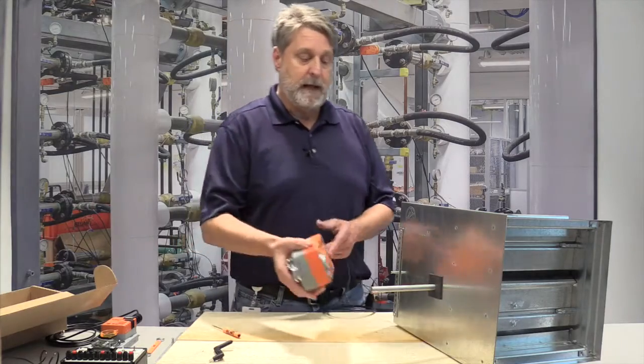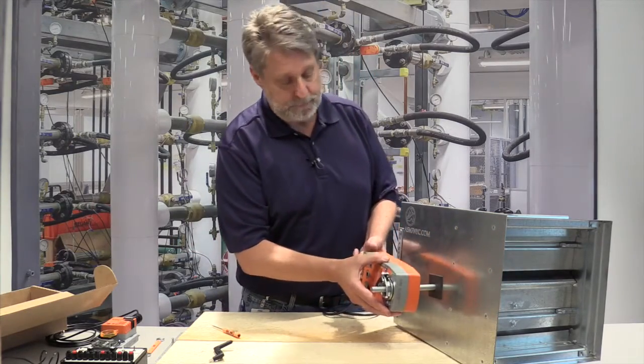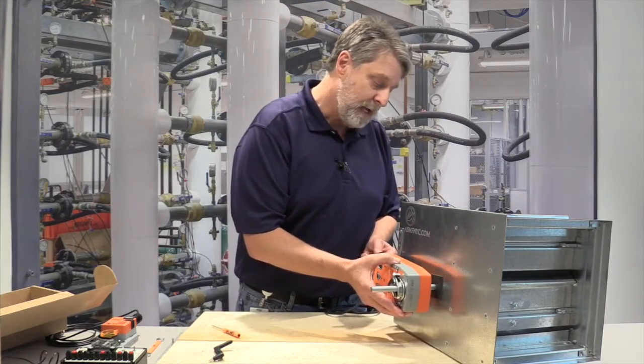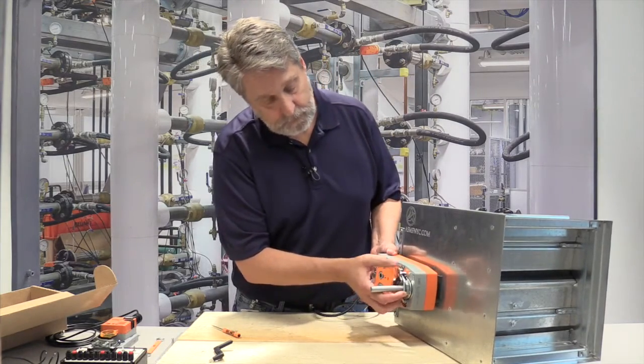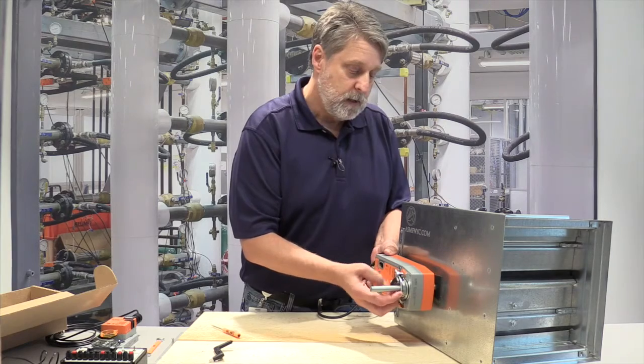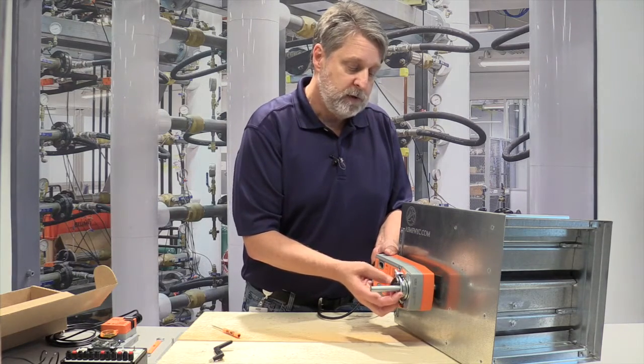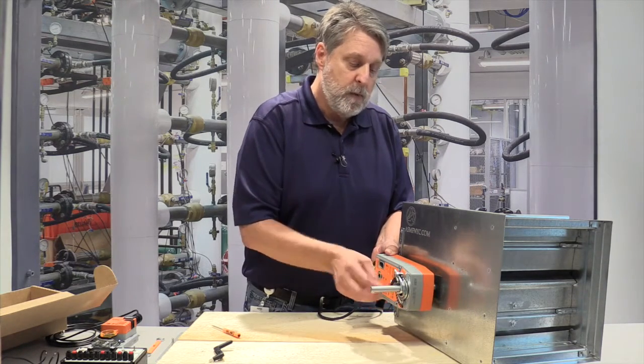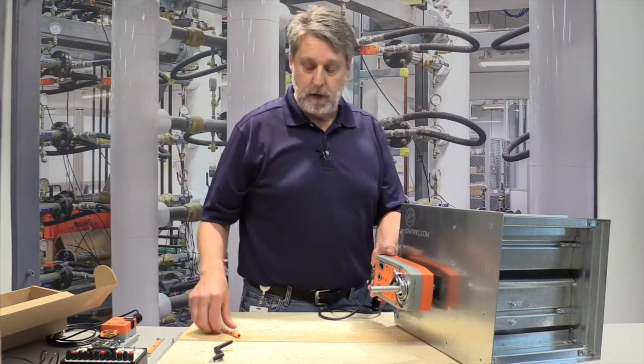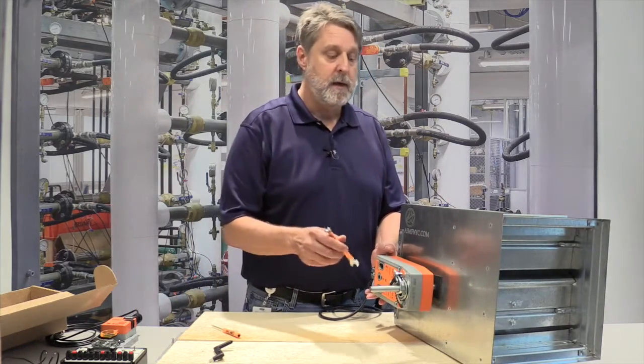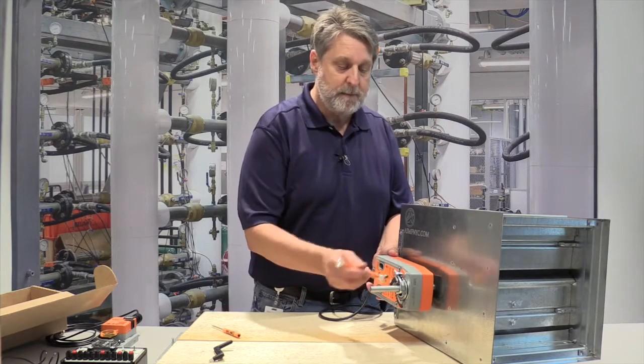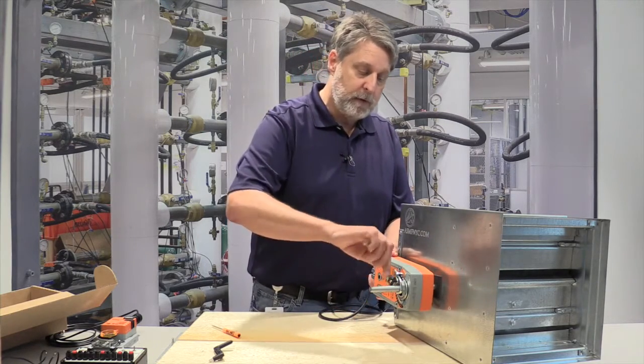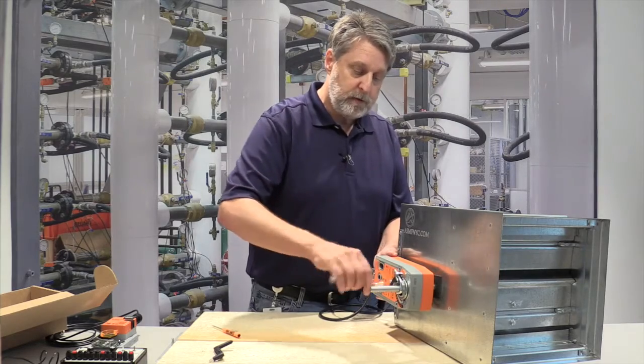I'm going to go ahead and mount this on the damper assembly so we can test it. When you're tightening this in the field, we want to have between six and eight foot pounds of torque on these nuts. Because I'm doing a demonstration today, I'm just going to snug these up.